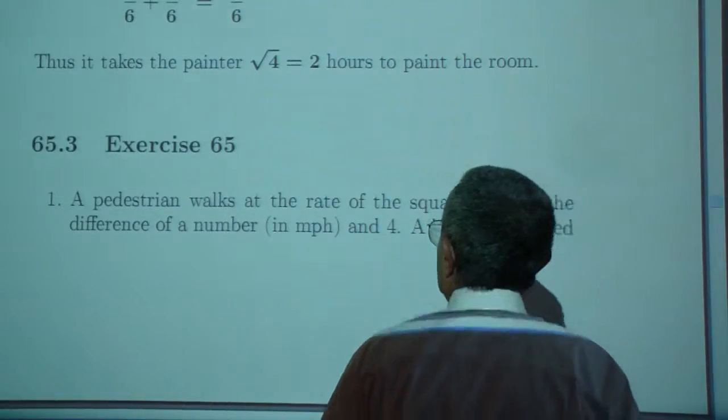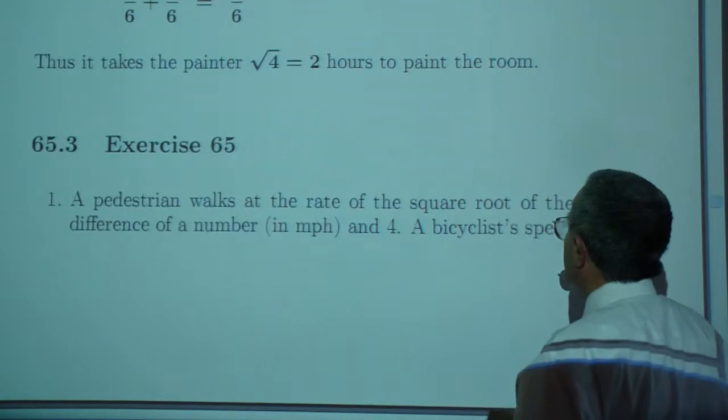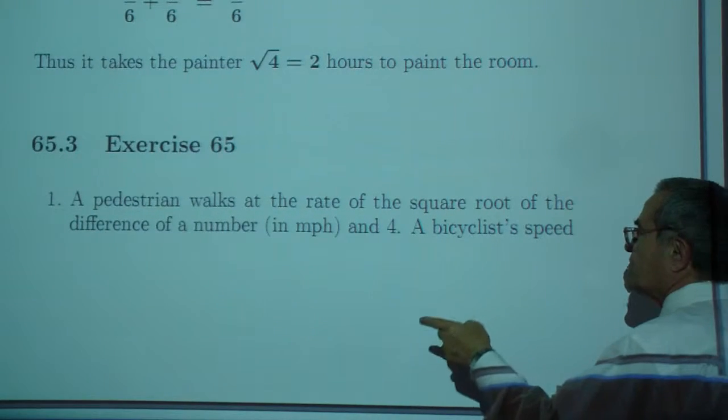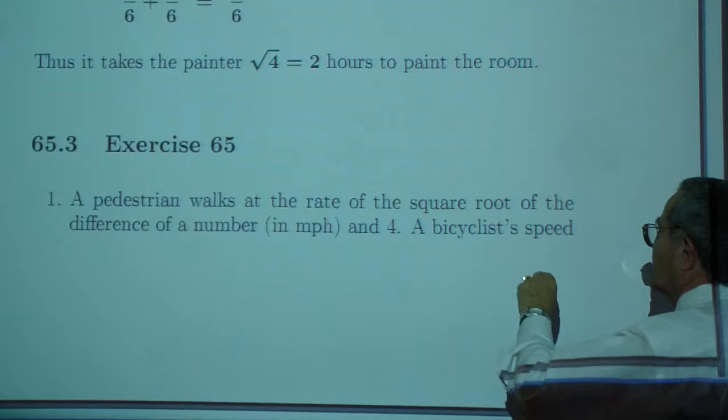Proposed exercises. A pedestrian walks at the rate of the square root of the difference of a number in miles per hour and four.